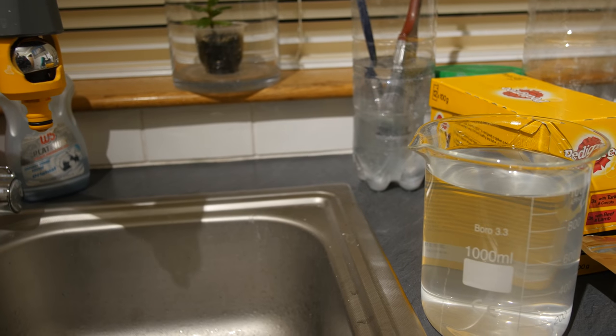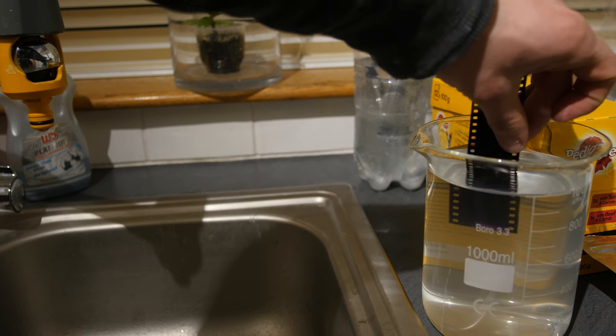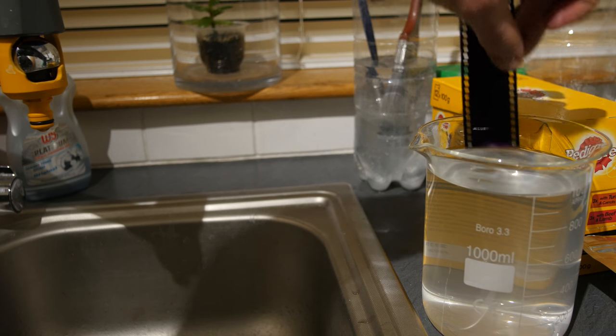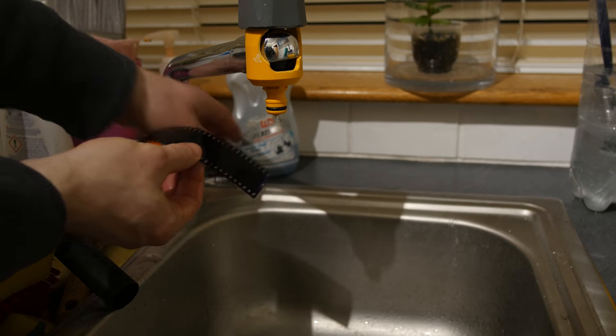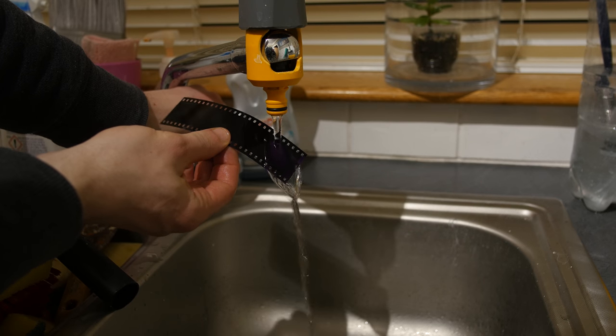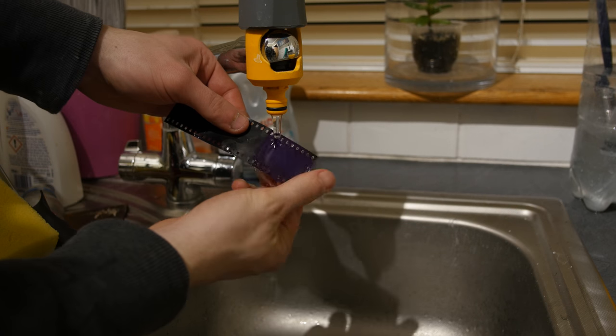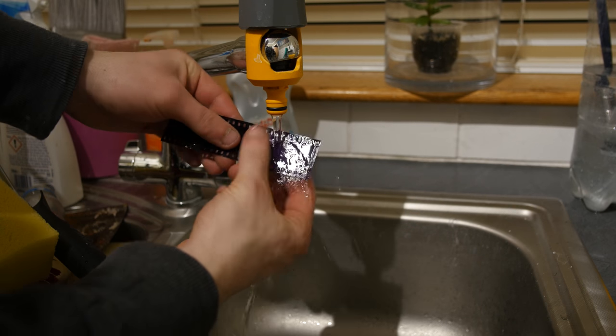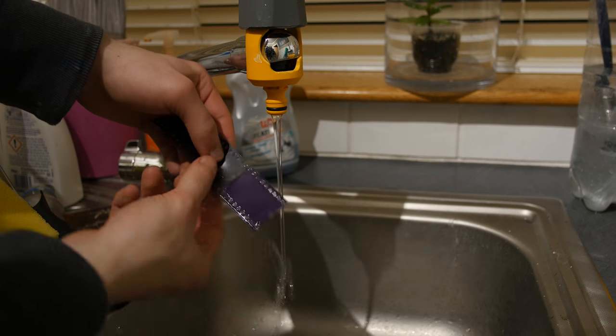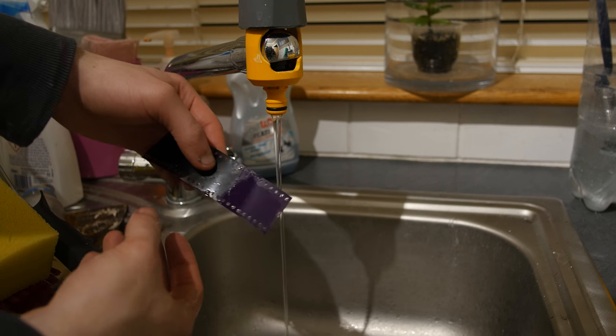But then watch what happens when you place the piece of film in the remjet remover and then get water on it. This is what happens. It just comes straight off. Really, really easily.